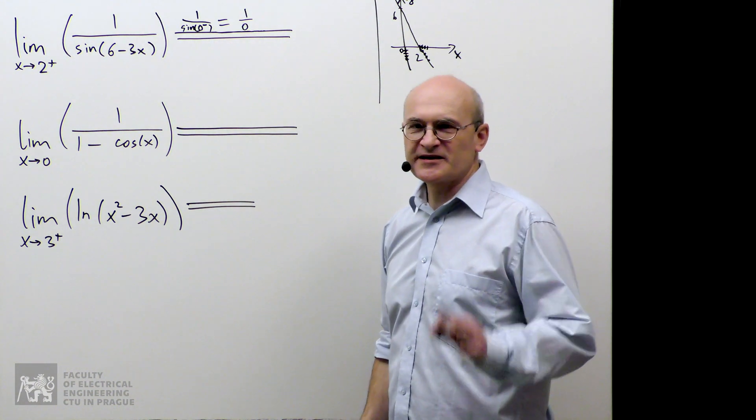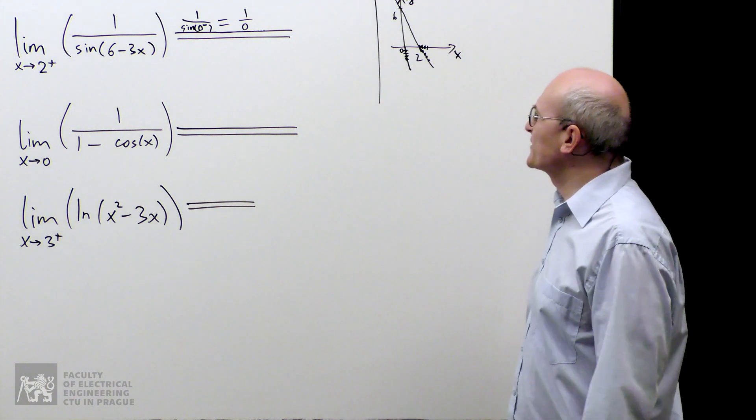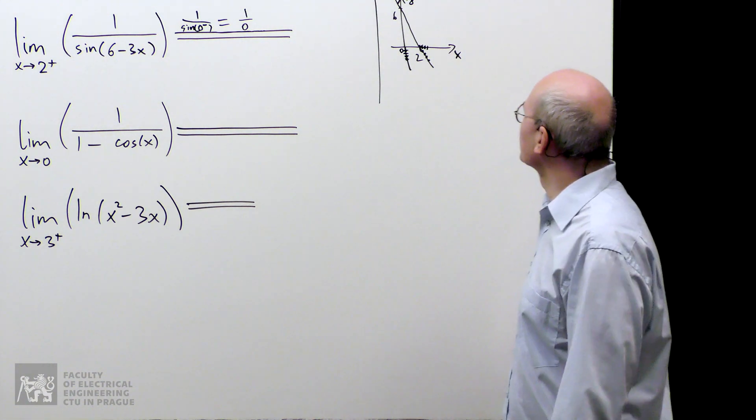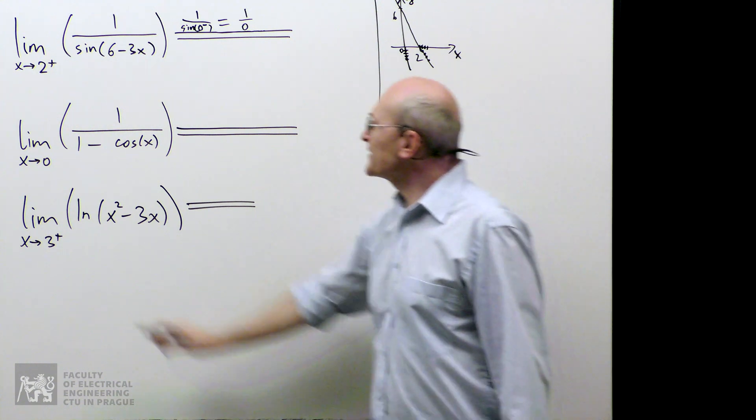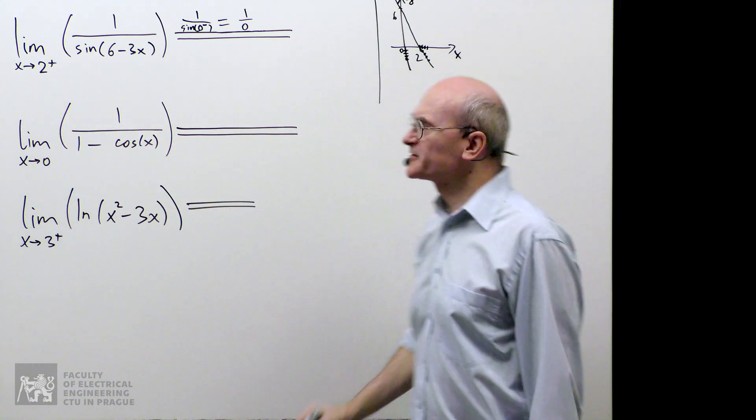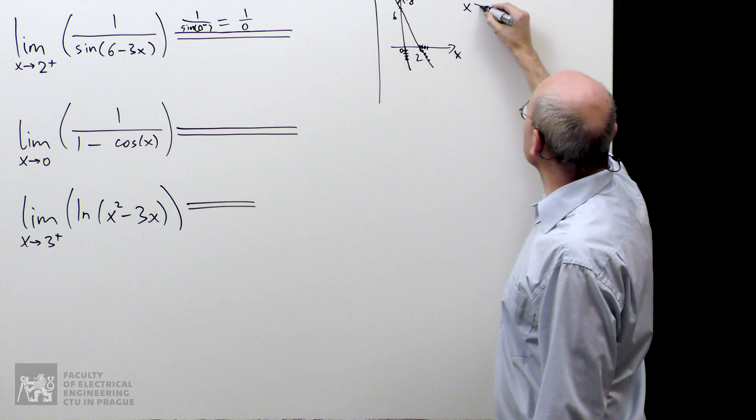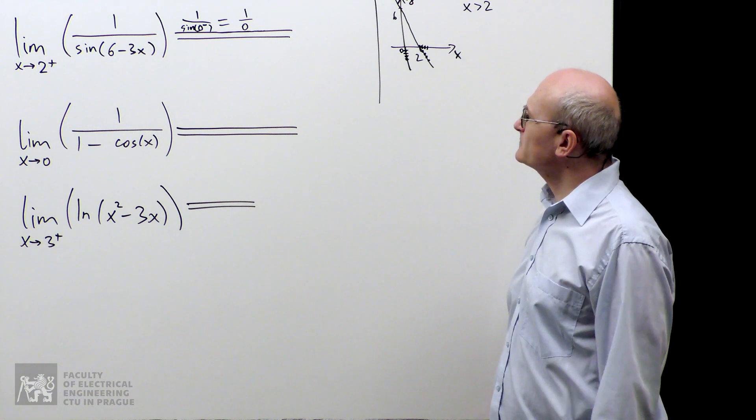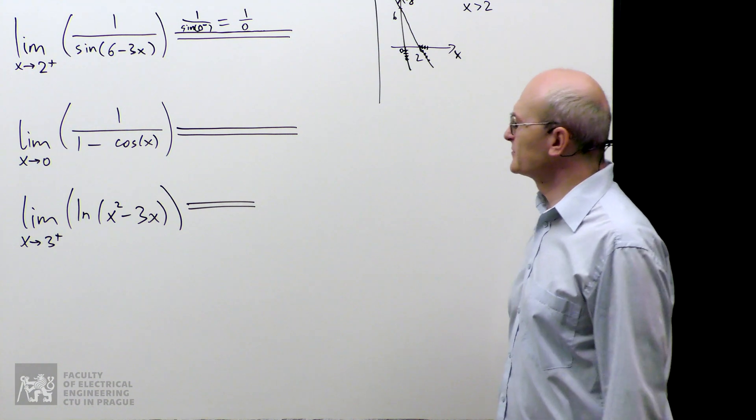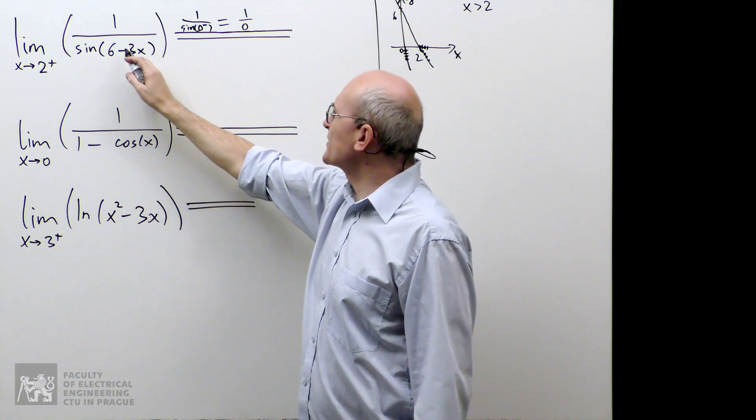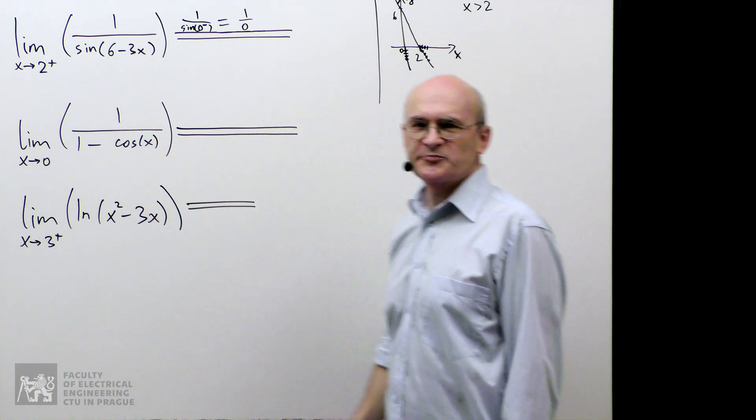So that was the second approach. Now let's try the third approach, which is algebraic. We have information when x approaches 2 from the right, it means that x is larger than 2. Now I would like to use this information to learn about 6 minus 3x. So let's play with it.